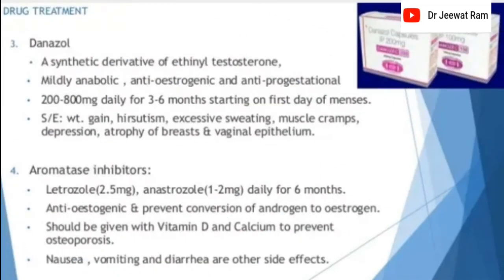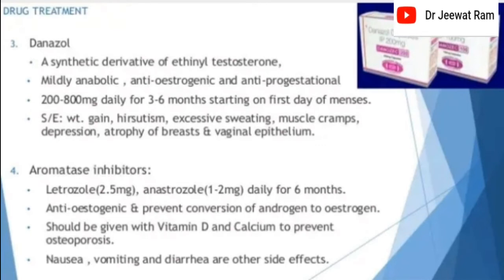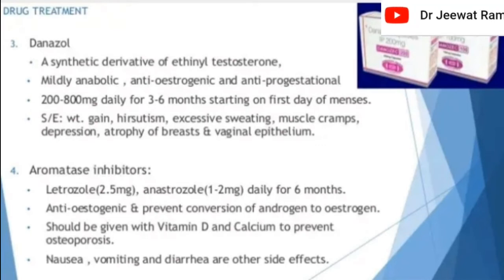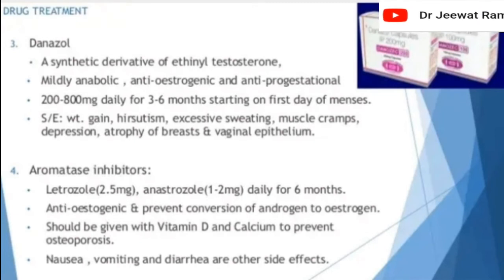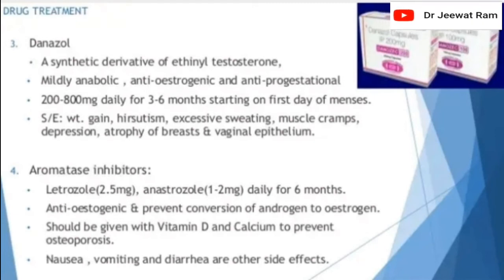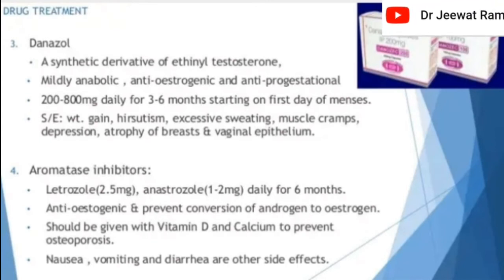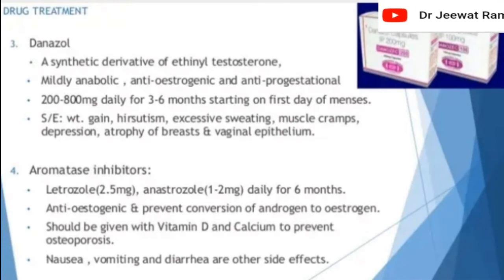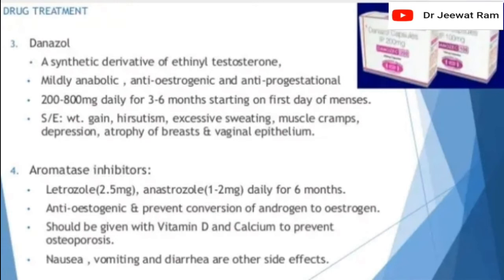Danazol, a synthetic derivative of ethyl testosterone, is mildly anabolic, anti-oestrogenic, and anti-progestational. Given at 200–800 mg daily for 3–6 months starting on the first day of menses. Side effects include weight gain, hirsutism, excessive sweating, muscle cramps, depression, and atrophy of breasts and vaginal epithelium.